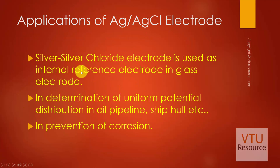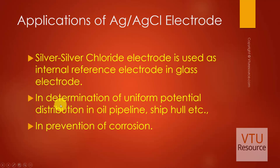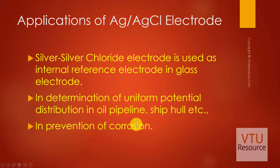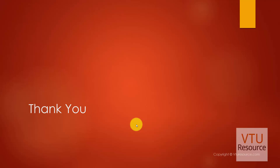Some of the applications of the Ag/AgCl electrode are as follows: it is used as an internal reference electrode in the glass electrode, which will be discussed later in the same module. It is also used to determine the uniform potential distribution in oil pipelines, ship hulls, etc., and in the prevention of corrosion, both of which will be discussed in the next module.